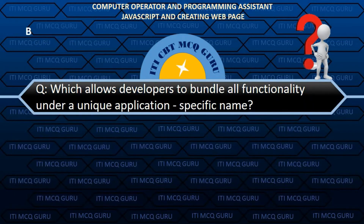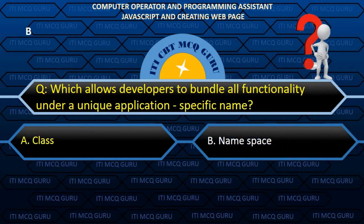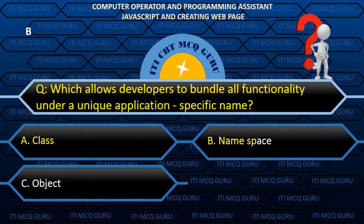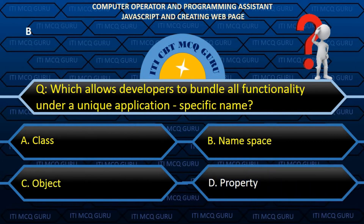Which allows developers to bundle all functionality under a unique application-specific name? B. Namespace.